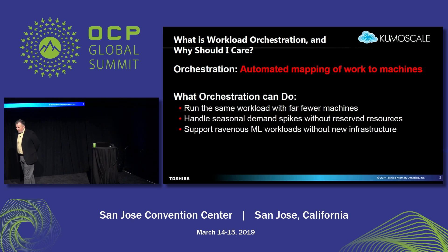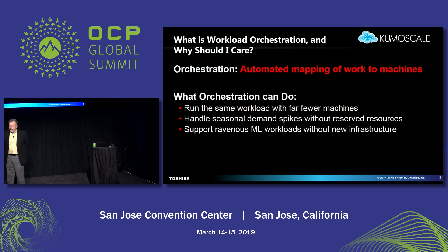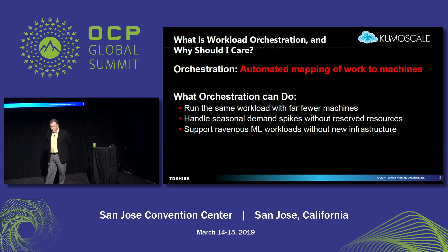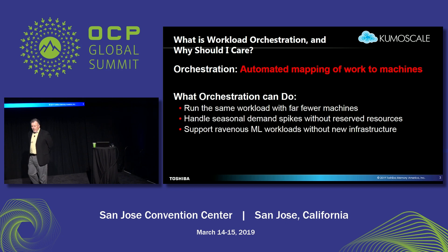For most of us, we go into our corporate IT center and ask the IT guys what those machines are used for. They will say, well, that's accounting machines, those belong to engineering, and they would not think of swapping work between them. What orchestration can do is to run the same work with fewer machines and handle demand spikes without reserving resources. The savings associated with this technique are just jaw-dropping.